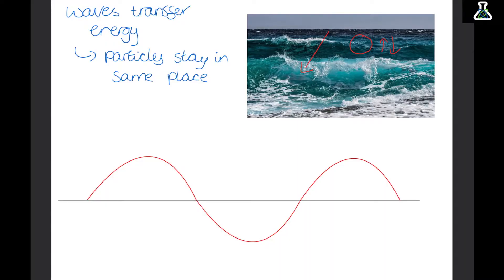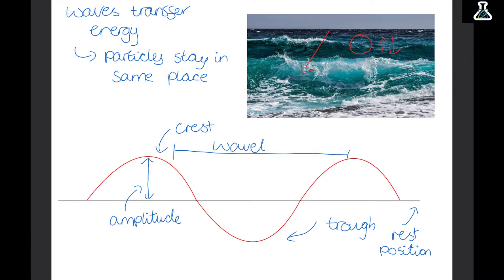Now this is a diagram of a wave. The tall bits are called the crests and the low bits are called the troughs. The height of the wave is the amplitude, and it is measured from the rest position, which is the black line going through the middle of the wave, up to the top of the wave.